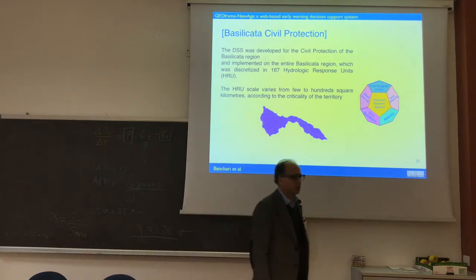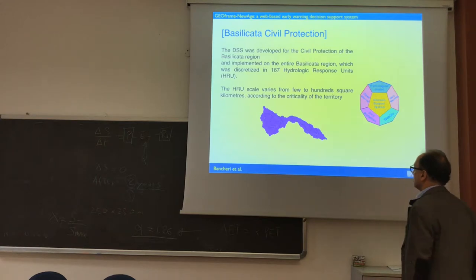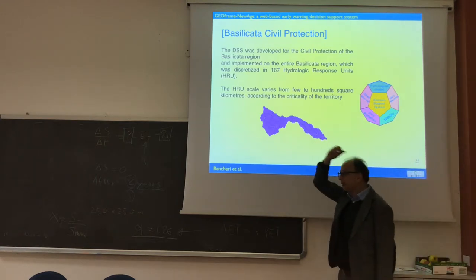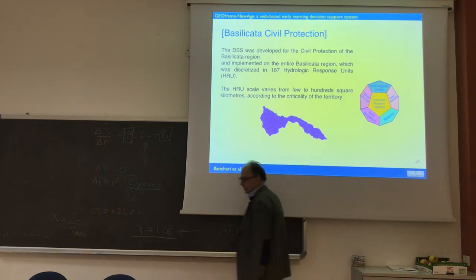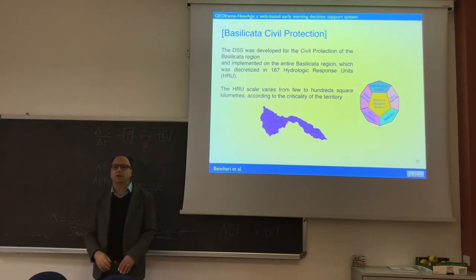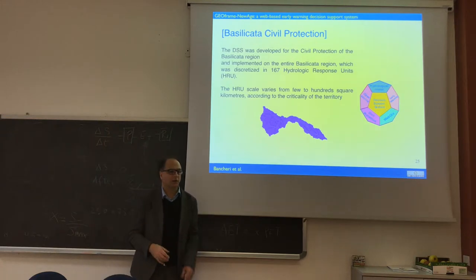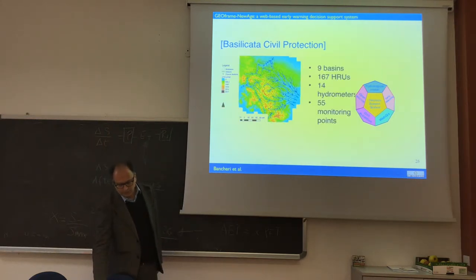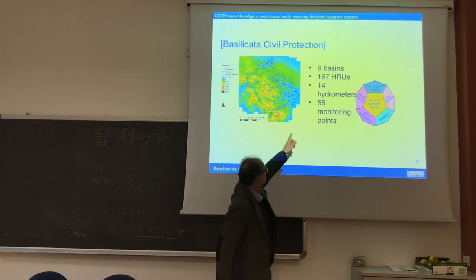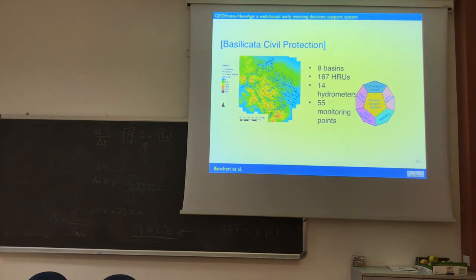The discretization was not extremely fine — we have only 167 hydrological response units, meaning units where we have a single water budget data point. These units were not subdivided into equal areas, but rather according to priorities and the vulnerability of the region. There are nine basins going out to the sea, 167 HRUs, just 14 hydrometers, and 55 monitoring points.